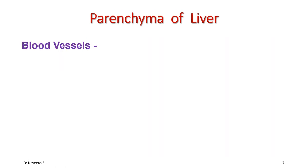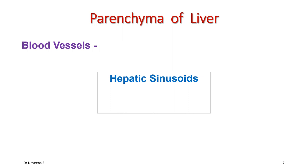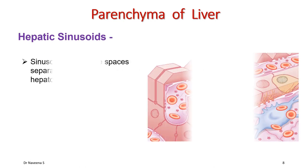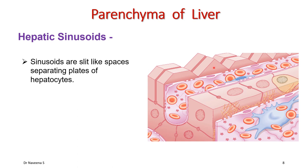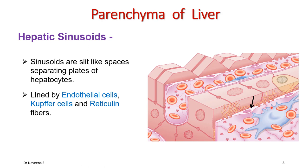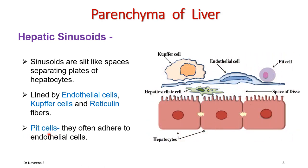The next component of parenchyma is blood vessels: hepatic sinusoids, hepatic artery, and portal vein. Hepatic sinusoids are slit-like spaces separating plates of liver cells. They are lined by fenestrated endothelium composed of endothelial cells and larger hepatic macrophages known as Kupffer cells. These cells are not supported by a basement membrane, but reticulin fibers are seen between the endothelium and hepatocytes. Occasionally, pit cells may be found adherent to the endothelial cells; they are large granular lymphocytes.